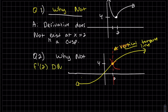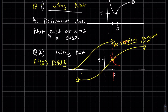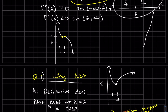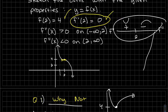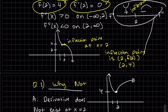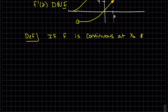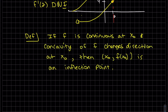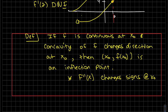One last point: when the concavity changes — when the second derivative goes from positive to negative or vice versa — this is called an inflection point. It changes concavity at x equals 2. The inflection point is at (2, f(2)) which we know is (2, 4) since we were given that point. Basically the second derivative changes sign at x naught.